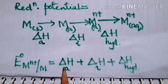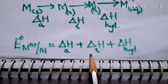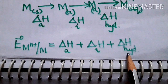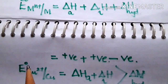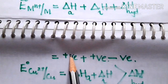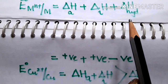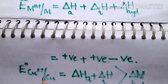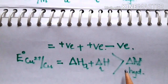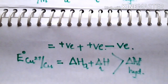Enthalpy of atomization and ionization enthalpy are supplied, so their values are positive. Hydration enthalpy is always released, so it is negative. E° (M^n+/M) will be positive when hydration enthalpy does not compensate for the sum of enthalpy of atomization and ionization enthalpy. In the case of copper, the hydration enthalpy is not enough to compensate, making the E° value positive.